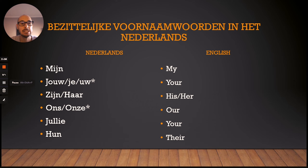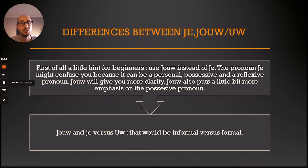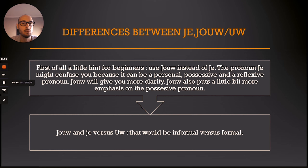So these were the possessive pronouns in Dutch. And now I'd like to continue and take a look at some of the special cases. First of all, I want to speak about the differences between je, jouw and u. Maybe a little hint for beginners: if you learn the possessive pronouns, I'd recommend you to use jouw instead of je. Because jouw can be a personal pronoun, a possessive pronoun, but it can also be a reflexive pronoun. So in order not to get confused, maybe just think about using jouw as a possessive pronoun — it gives you more clarity and it actually puts more emphasis. Jouw really means 'your'.